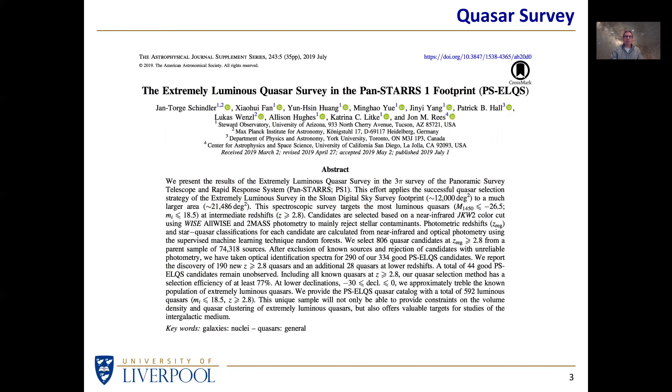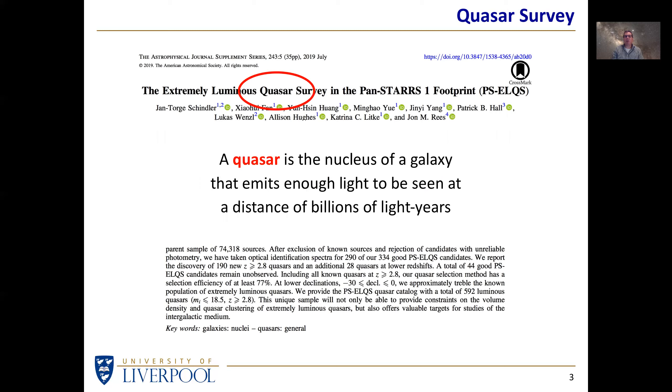So it started with a survey. Professionals have surveyed lots of these so-called quasars. What is a quasar? Well it's the nucleus of a galaxy, it's a supermassive black hole at the heart of a galaxy that is emitting enough light to be seen at a distance of many billions of light years.